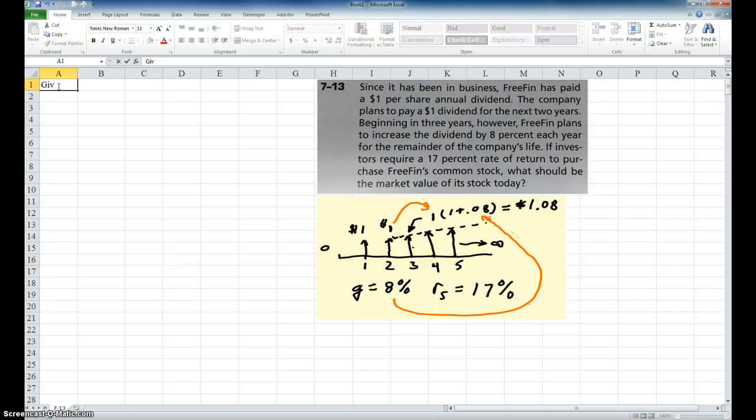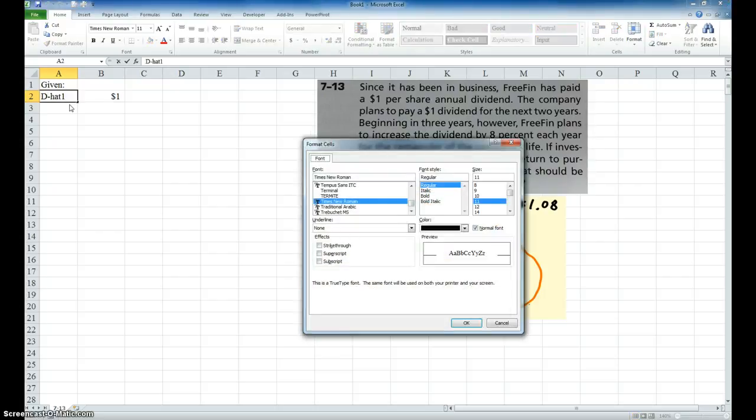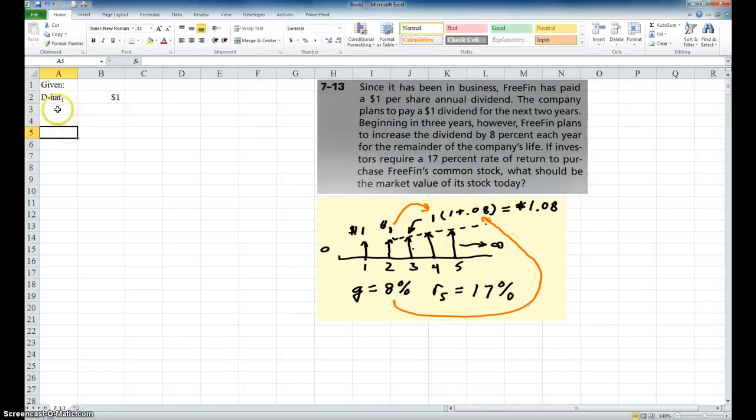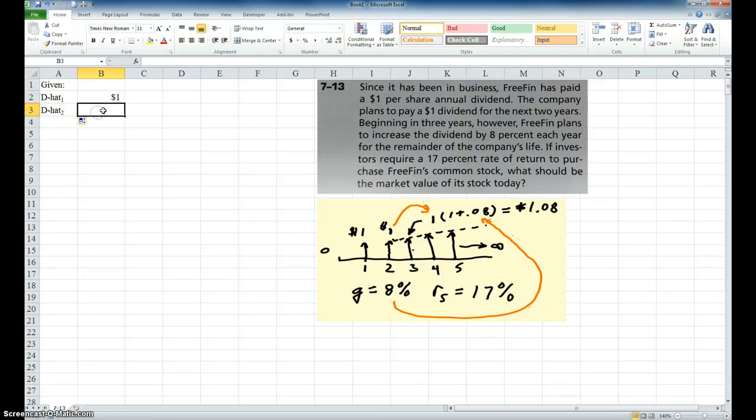Okay, so let's go ahead and put this into Excel. First of all, we can say D hat, it's hard to write that little hat on top of the letter, so we'll just call it D hat, sub 1 is $1. Okay, and I'm going to go ahead and highlight this one. I'm going to go Control, Shift, F for font, Alt, B for subscript, and Enter. And then I'm going to drag that down. D hat sub 2 is the same thing, so I'm going to drag that down too.